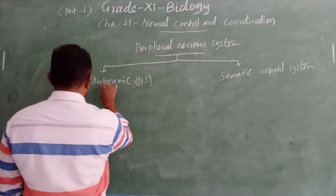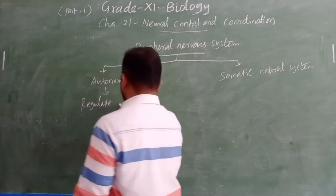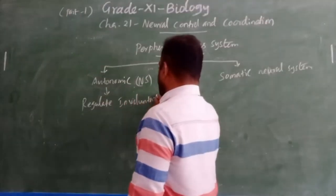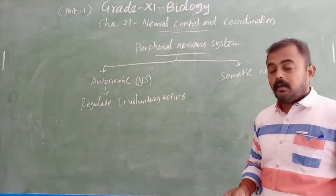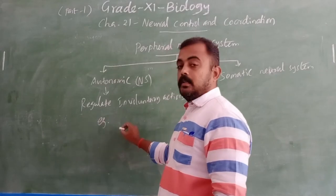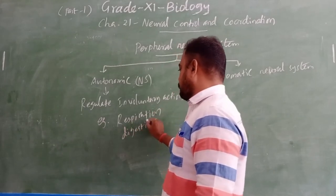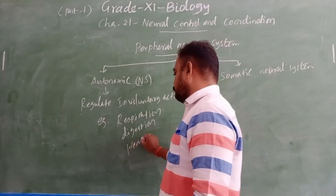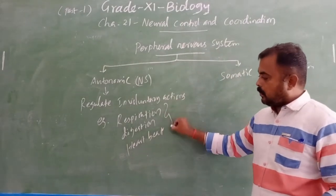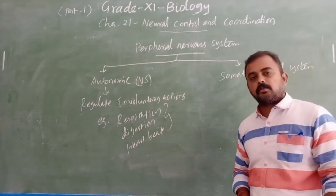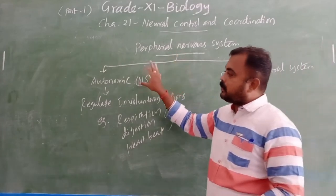The autonomic nervous system regulates involuntary actions — actions not under our conscious control. Examples of involuntary actions are respiration, digestion, and heartbeat. These processes are controlled by the autonomic nervous system.